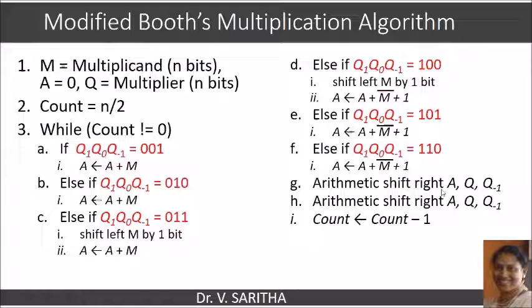So three bits means eight conditions. For 000 and 111 condition, we are not performing either addition or subtraction, we directly perform arithmetic shift right on A, Q, and Q-1. Two times we are supposed to perform this and count is decremented. If count is not equal to 0, repeat this process until count is equal to 0.